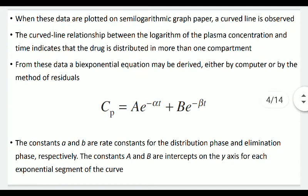When this data is plotted on semi-logarithmic graph paper, a curved line is observed. A curved line relationship between the log of the plasma concentration and time indicates that the drug is distributed in more than one compartment. In a semi-logarithmic plot, the existence of a curve instead of a straight line confirms that the given drug is following a two-compartment model.